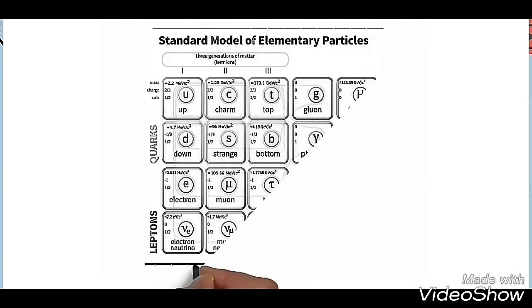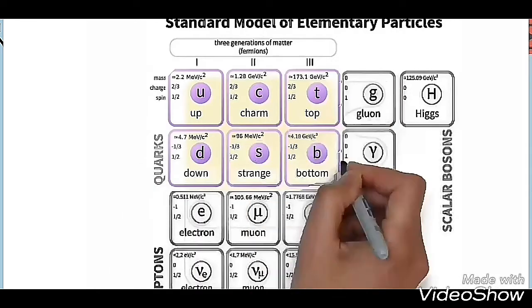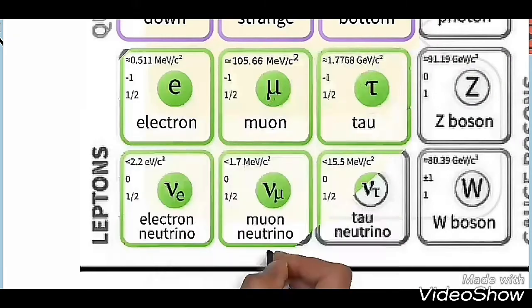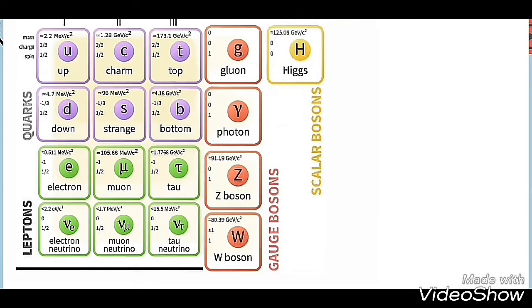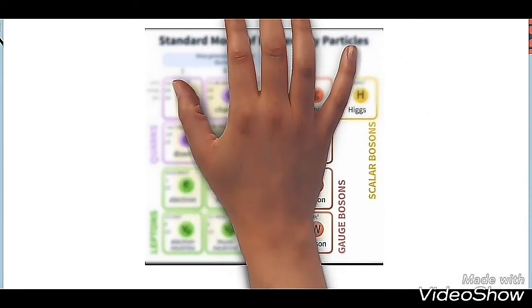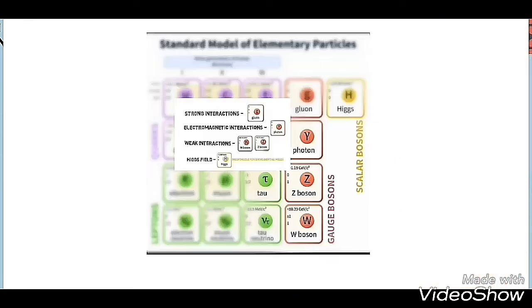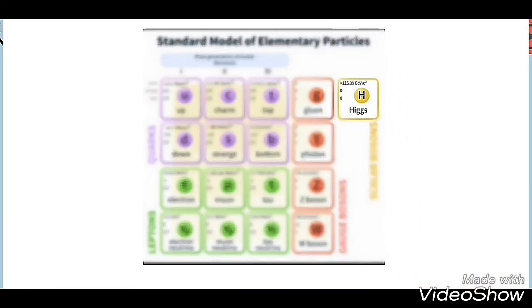This is the Standard Model of particle physics. It contains all the fundamental particles of nature. They are total 17 in number. These six purple particles are quarks. These six green particles are leptons. Now these remaining five particles are bosons. The four orange ones are gauge bosons which mediate fundamental forces of nature. And the yellow one is scalar boson Higgs boson, which is quanta of the Higgs field.